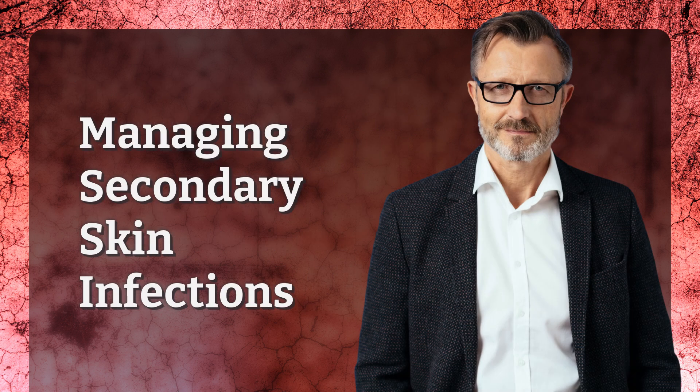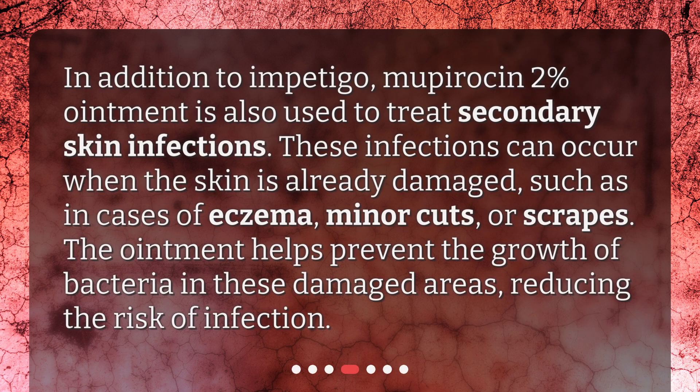Managing Secondary Skin Infections. In addition to Impetigo, Mupirocin 2% ointment is also used to treat secondary skin infections. These infections can occur when the skin is already damaged, such as in cases of eczema, minor cuts, or scrapes. The ointment helps prevent the growth of bacteria in these damaged areas, reducing the risk of infection.